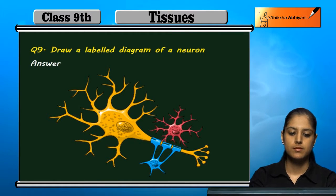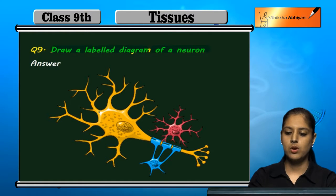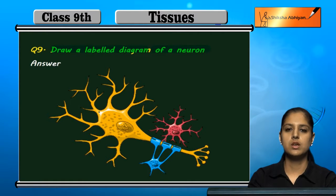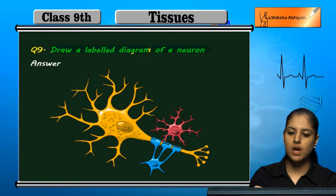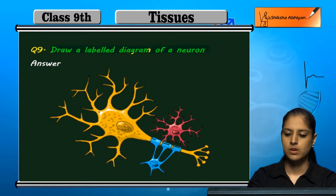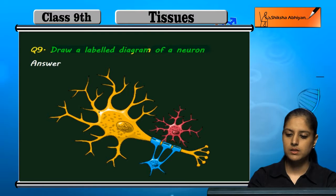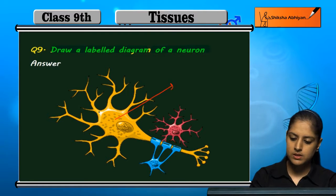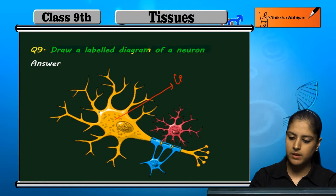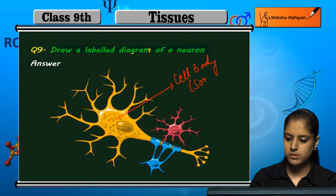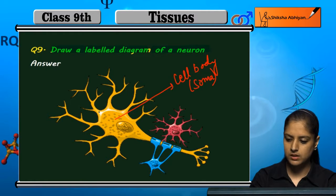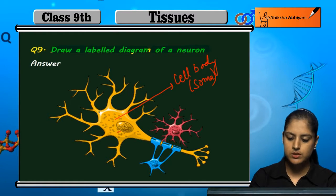Question 9: draw a labelled diagram of a neuron. This is how a neuron looks. This is the cell body, also called the soma.